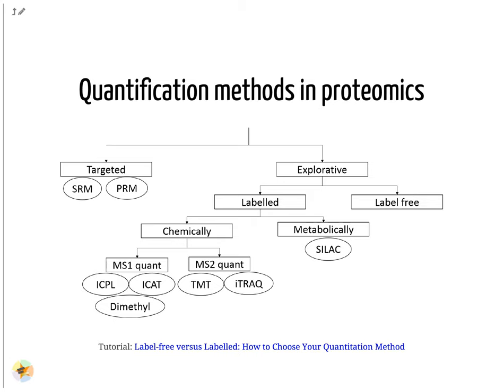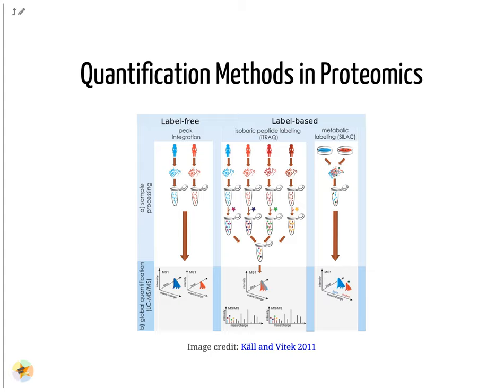Different quantification approaches exist in mass spectrometry-based proteomics. In explorative proteomic approaches, relative quantification methods are applied, comparing the amount of proteins between different samples. Label-free and label-based methods exist. Labels add specific mass tags to peptides of different samples via metabolic or chemical ways. In label-free approaches every sample is measured separately, and afterwards the protein amounts are compared between measurements. Chemical labeling techniques add a mass label to the digested peptide; afterwards the samples are mixed and measured in one run. The different masses of the added labels allow distinguishing the origin of the proteins during data analysis.